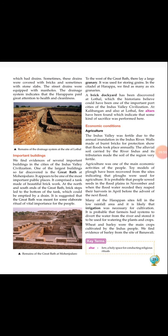Many Harappan sites fell in low-rainfall areas, so irrigation was necessary for cultivation. It is probable that farmers had a system to divert water from rivers and store it to water their crops. Wheat and barley were the main crops cultivated by the Indus people.